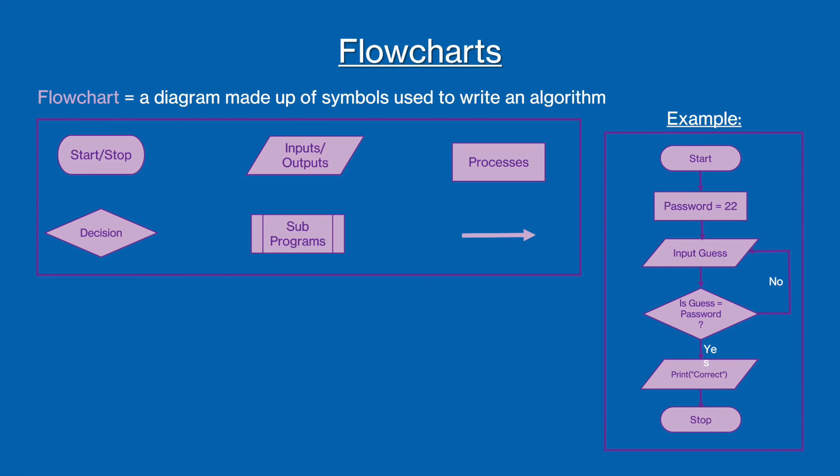Here is an example to see how we can connect these symbols to make a flowchart. This flowchart shows an algorithm that continually asks the user to input their password until the password entered matches the one stored, at which point the message correct is outputted and the program stops.